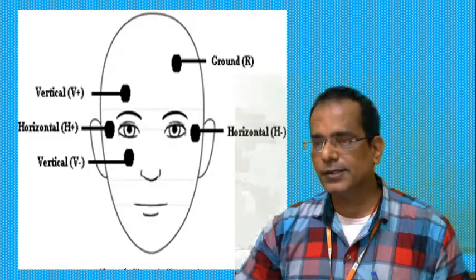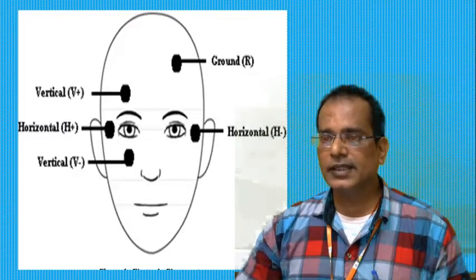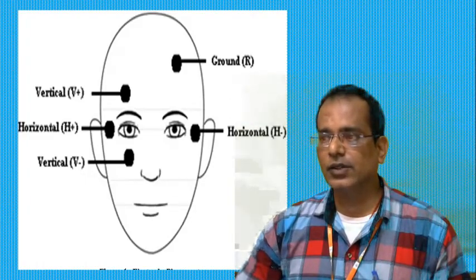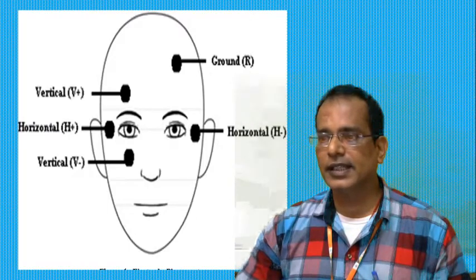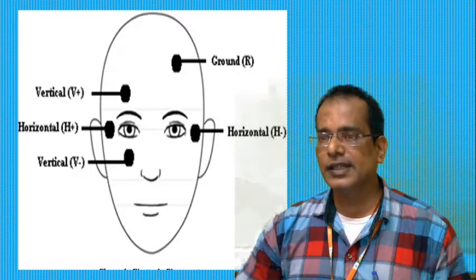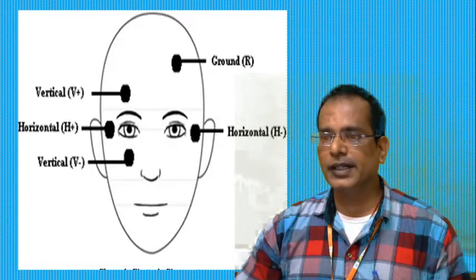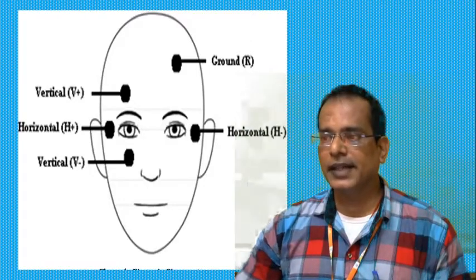The advantage of this method is that it is non-invasive and is able to record large eye movements for research purposes. This method can also record eye movements when the eyelids are closed. EOG voltages are higher than EEG signals because the eye is outside the skull structure — there is no bone to attenuate the signal. The cornea at the front has a positive polarity.